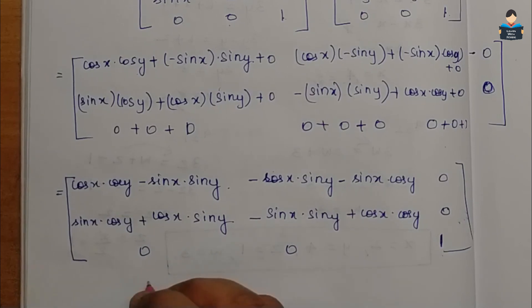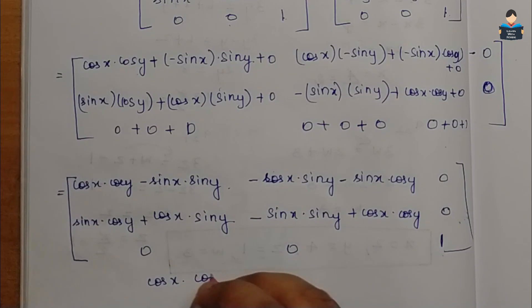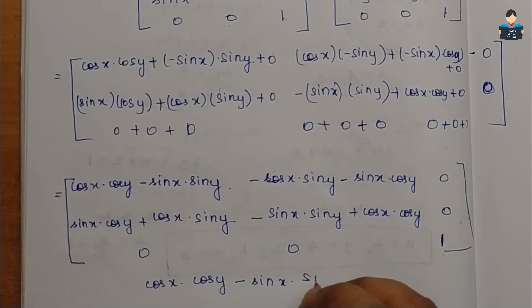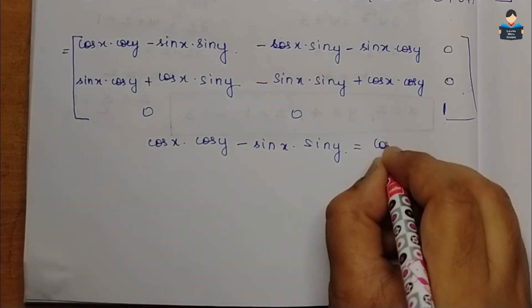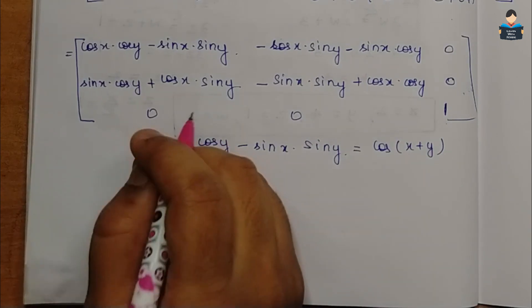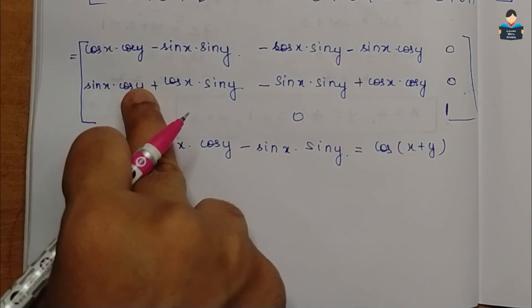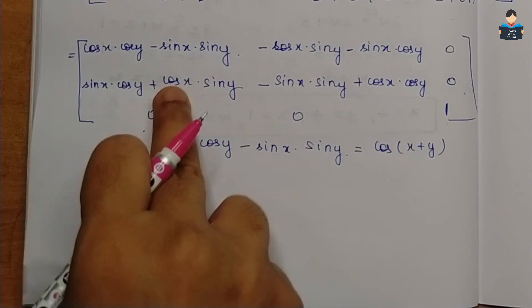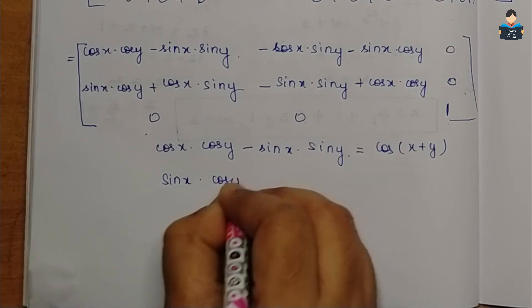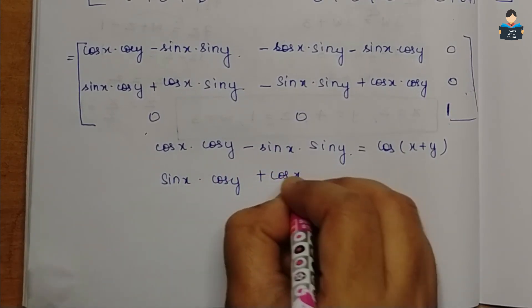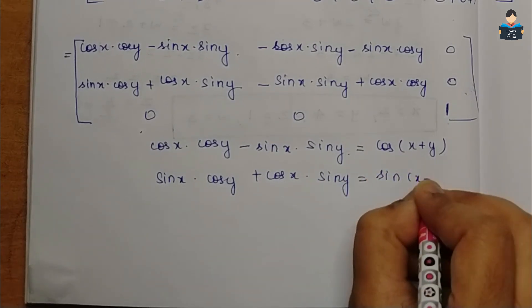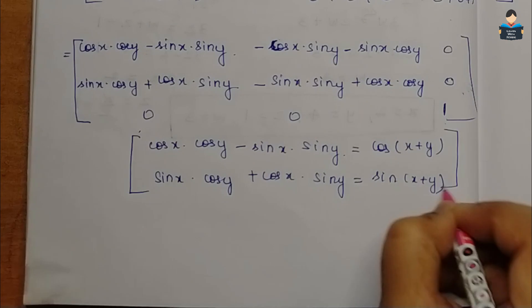Now we apply the trigonometric identities: cos x·cos y minus sin x·sin y equals cos(x+y), and sin x·cos y plus cos x·sin y equals sin(x+y). These are standard identities.